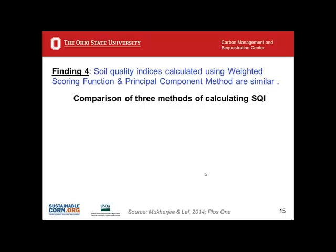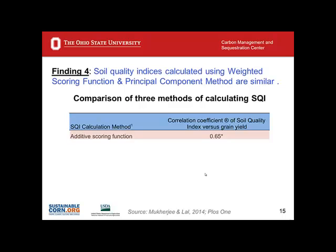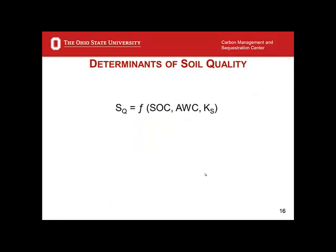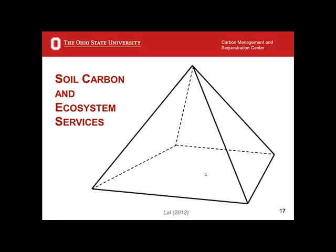Finding four: the soil quality indices calculated using weighted scoring function and principal component methods are indeed similar. Comparisons show that the adaptive additive scoring function is highly correlated, and the weighted scoring function and the principal component method produce very comparable results. Coming back to summarizing: soil quality is a function of components such as soil organic carbon, available water capacity, and hydraulic conductivity — among the most important indicators. Soil carbon is the key factor, the key determinant, and the critical indicator of soil quality.